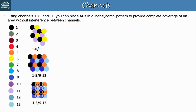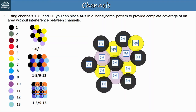Using those three channels in the 2.4 GHz band, you can place APs in a honeycomb pattern to provide complete coverage of an area without interference between channels. The coverage area of each AP overlaps to provide complete coverage of the area, but the frequencies don't overlap, which helps avoid interference between the access points. When you have to provide wireless coverage over a large space, you should arrange your access points in this honeycomb pattern.